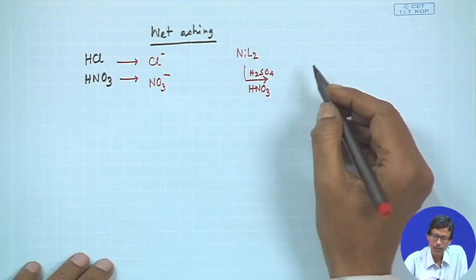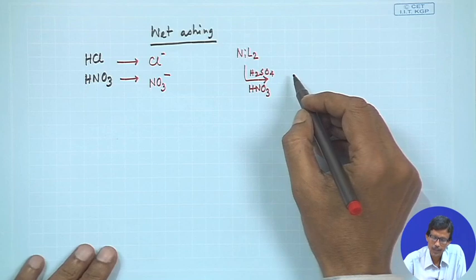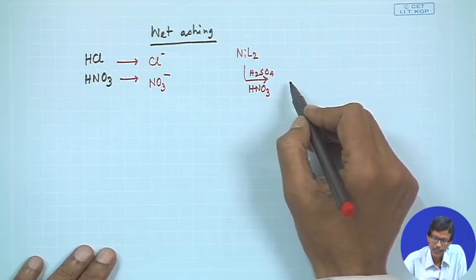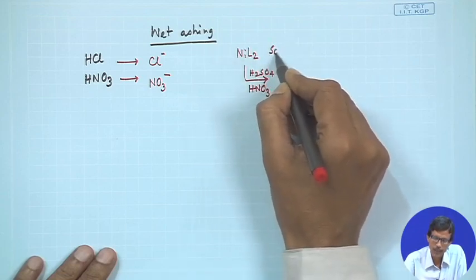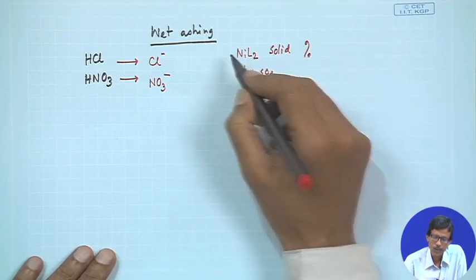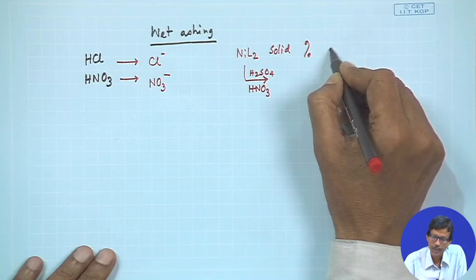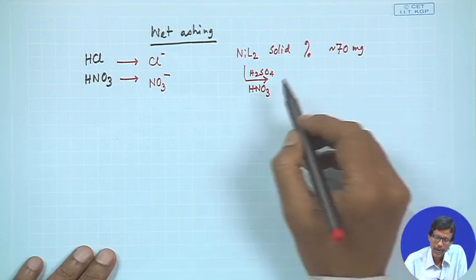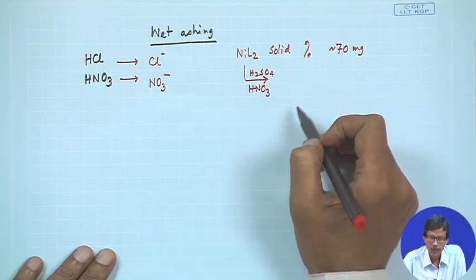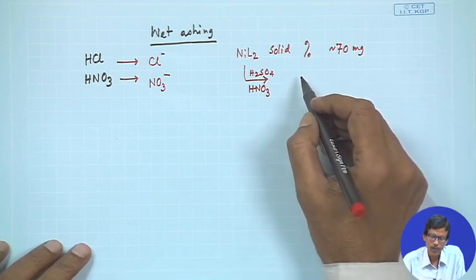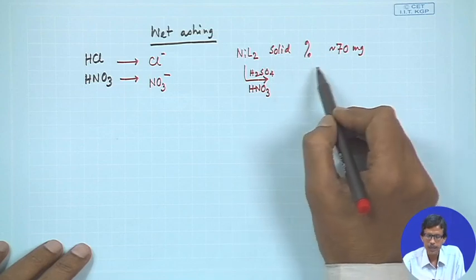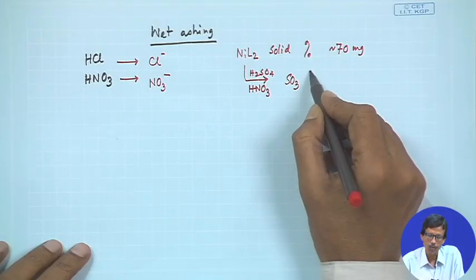In the beaker, as we saw in the previous class, we cover it with a glass rod inserted in it and treat with the concentrated acid mixture because this complex is solid. Some weighed percentage — say about 70 milligrams of that sample — is weighed out and taken into the beaker and treated with this particular acid mixture. Nitric acid is consumed for oxidation of the organic part, and at the end all the organic part has been decomposed by formation of water and CO2, as indicated by the elimination of white fumes of sulfur trioxide.